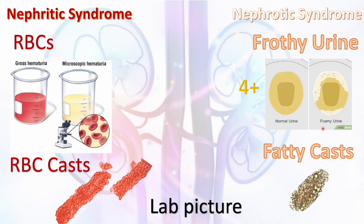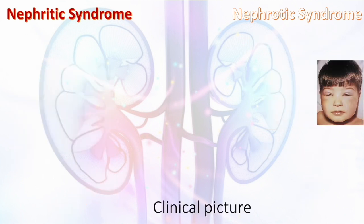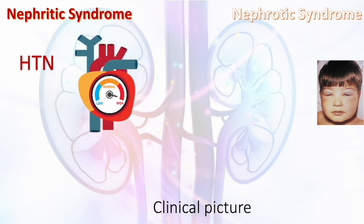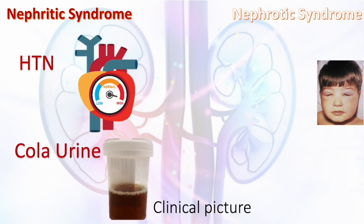From the clinical picture: in nephritic syndrome, the glomerulus is inflamed and not filtering well, so you accumulate water and salt leading to hypertension. Hypertension is a key feature of nephritic syndrome — there is more renin activation. Because you're bleeding into urine, the urine is cola-colored. So a hypertensive child with cola-colored urine and red blood cell casts equals nephritic syndrome, also called nephritic sediment on urinalysis.